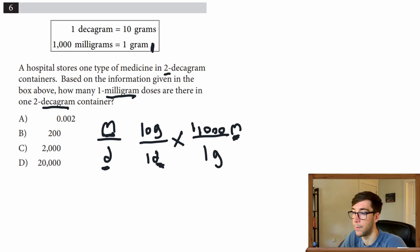But we know we got it right because we have grams on the top and on the bottom, meaning they will cancel out. When you multiply them, we have grams on top, grams on the bottom, and we can just cancel those out. Lastly, we're talking about two-decagram containers, so multiply by two.